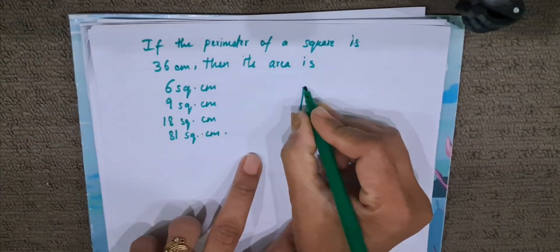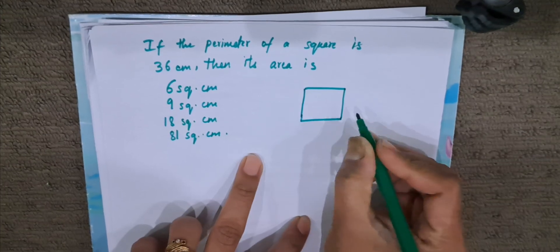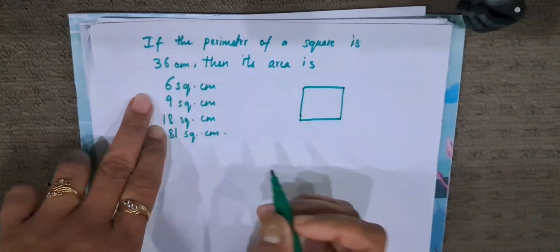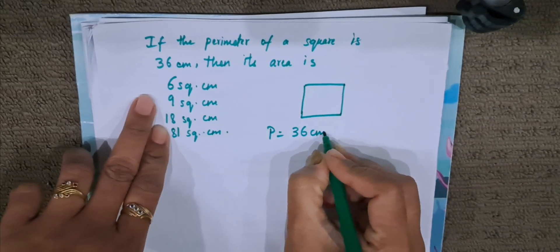Now here we will draw a rough figure of the square with sides. We do not know the sides; the perimeter is given. Perimeter of a square is 36 cm.